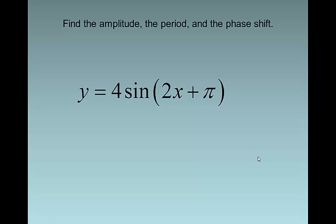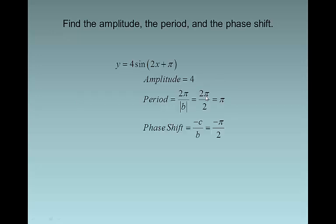Let's do another one. Find the amplitude, period, and phase shift. Notice A is 4, B is 2, and our C is π. Amplitude is the absolute value of A, so it's 4. Period is 2π over the absolute value of B, so 2π over 2 equals π. And our phase shift is negative C over B, and that's just negative π over 2.